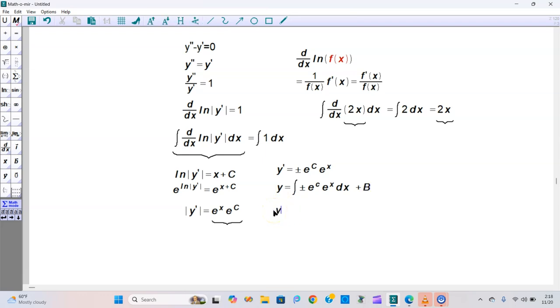So y will be equal to plus or minus e to the C times e to the x. Remember that this part in red is just a constant, so you have just this plus B. Call A plus or minus e to the C, so you just end up with y equals A e to the x plus B.